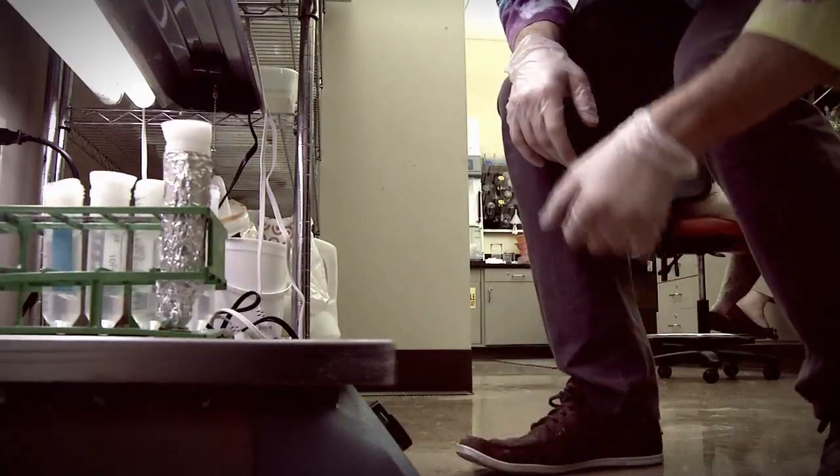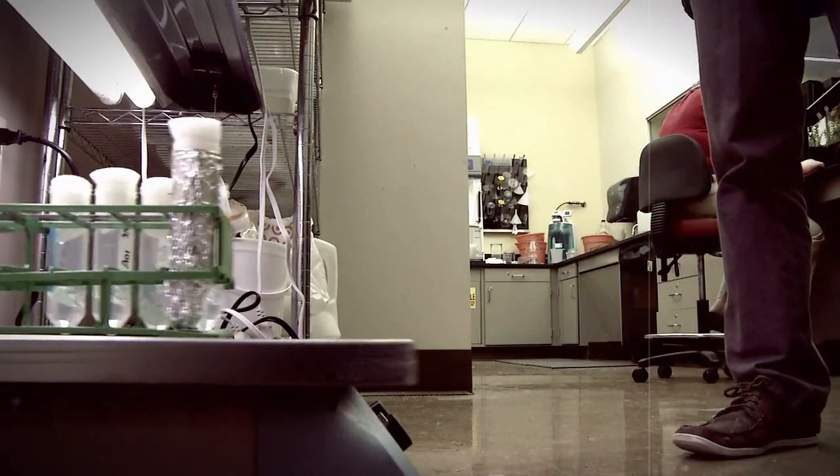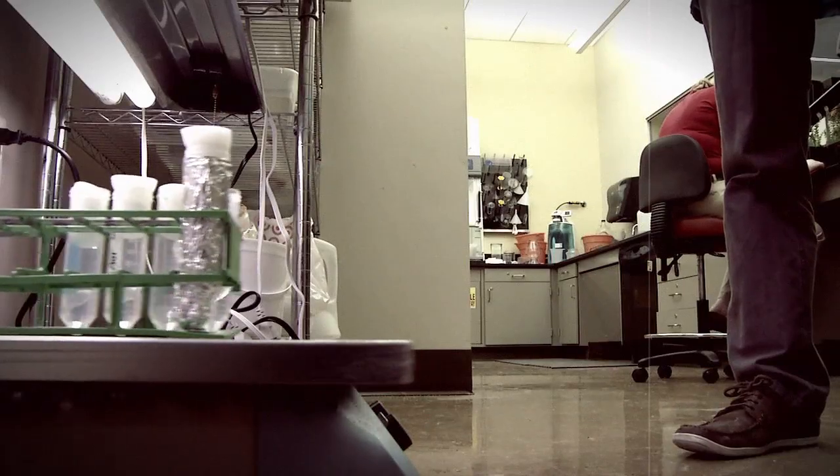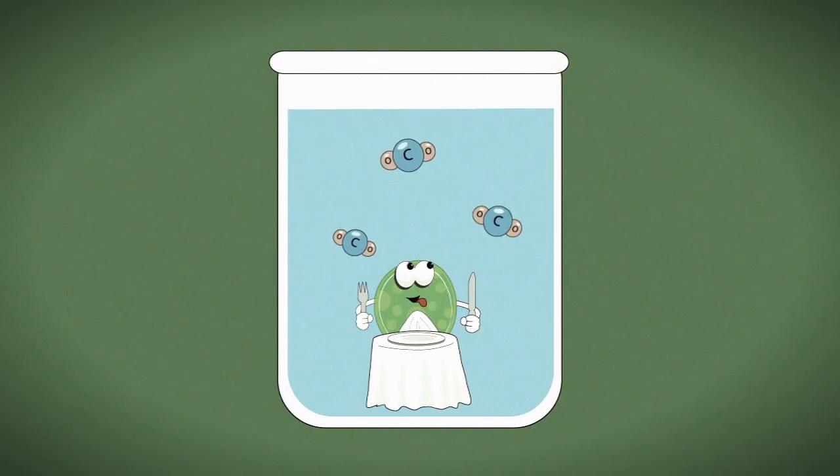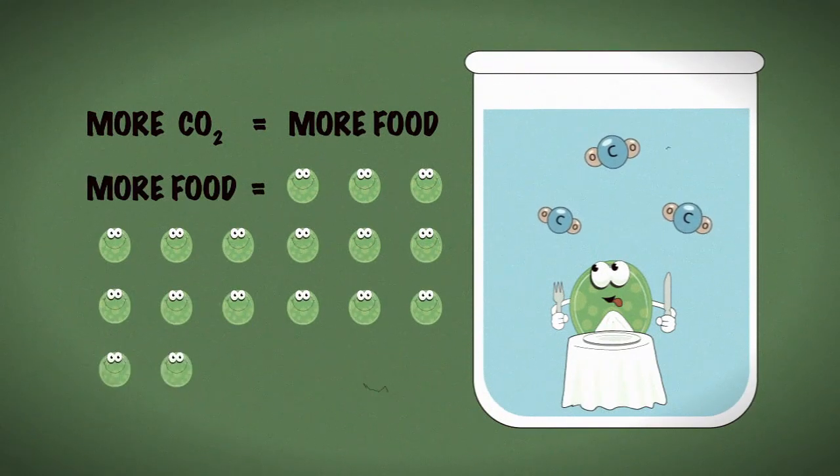Your algae spends another few days under the grow lamp, this time on something called a shaker. This machine may look funny, but it's actually a very helpful instrument. When it moves the culture around, it allows more carbon dioxide to dissolve in the water, which equals more food for the algae. The more food for the algae, the more the algae reproduce.